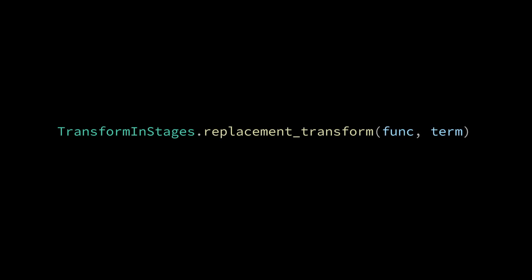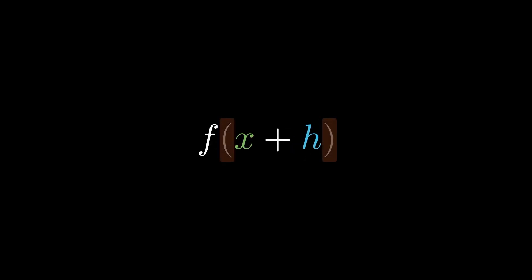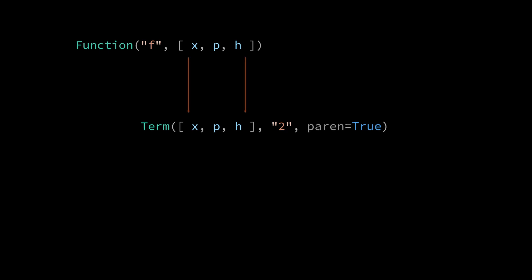So this is the animation returned by transform in stages dot replacement transform. Now if you pay attention to the parentheses you'll notice they don't transform over. And this is because while we pass in the x plus and h into both expressions there still is no correspondence between the parentheses.